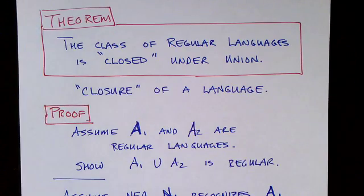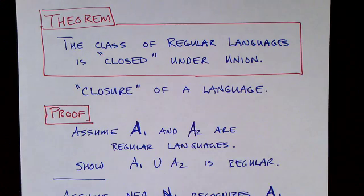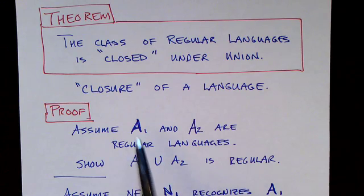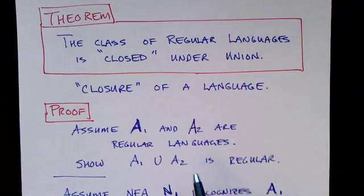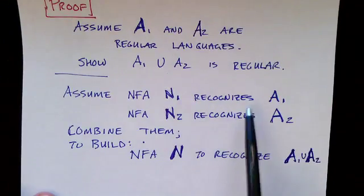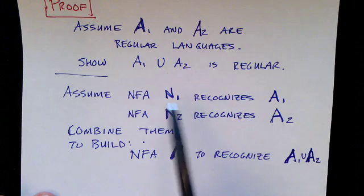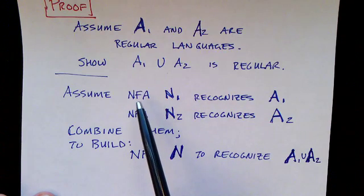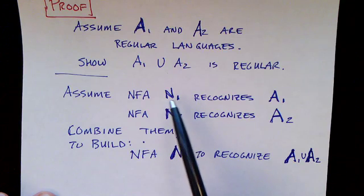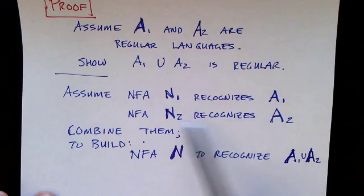We're going to prove that if you take two regular languages and union them, the result is also a regular language. Our proof assumes we have two regular languages and then shows that their union is regular. If A1 and A2 are regular languages, then we know there is some non-deterministic finite automaton that recognizes each one. So let's assume there's a non-deterministic finite state machine N1 that recognizes A1, and N2 recognizes A2.